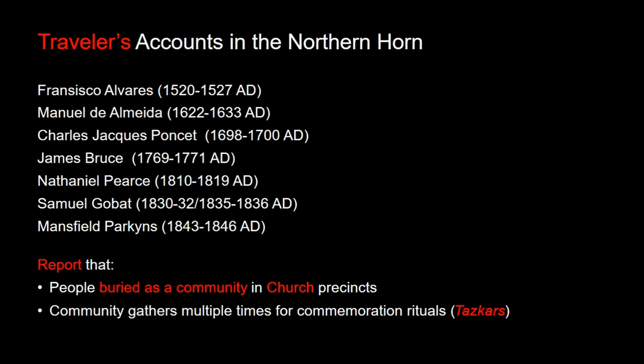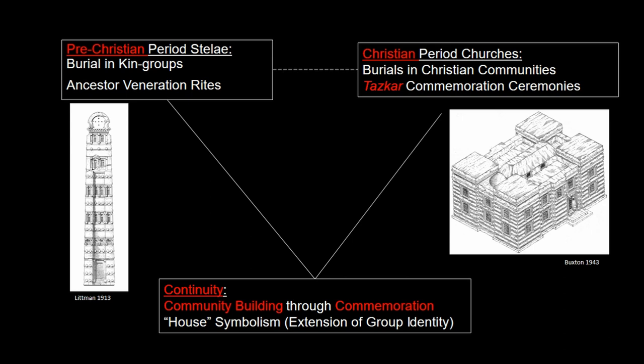Walker summarizes that in historical times, Tuskars took place every third day, seventh day, twelfth day, fortieth day, and eightieth day, with another Tuskar six months after, then a year, and then every seven years — though I'm not quite sure that frequency is not an exaggeration. Parkins also explains that anyone who does not show to these ceremonies is not regarded as a friend. Francisco Alvarez attests to the presence of the Tuskars in the 16th century, the earliest known record of their existence. We then see a transition from the pre-Christian family to the Christian community, but at least some of the ritual practices that built those groups remain the same.